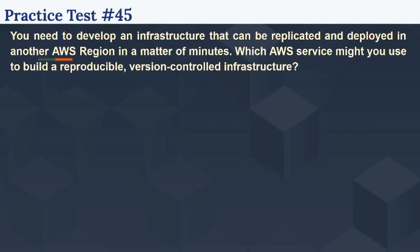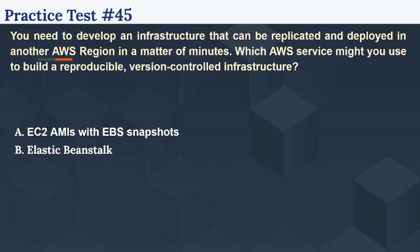The 45th question: You need to develop an infrastructure that can be replicated and deployed in another AWS region in a matter of minutes. Which AWS service might you use to build a reproducible, version-controlled infrastructure? Options: A) EC2 AMIs with EBS snapshots, B) Elastic Beanstalk, C) CloudFormation, D) CloudWatch. Please select your answer in the next 5 seconds.